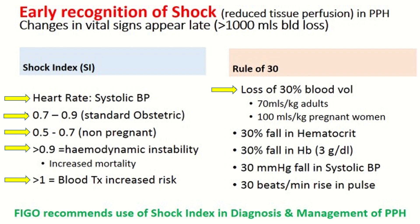According to the rule of 30, there is loss of 30 percent blood volume — meaning 70 mls per kg in adults and 100 mls per kg in pregnant women — there is a 30 percent fall in hematocrit, a 30 percent fall in hemoglobin (3 grams per deciliter), a 30 mmHg fall in systolic blood pressure, and a 30 beats per minute rise in pulse. FIGO recommends the use of shock index in the diagnosis and management of postpartum hemorrhage.